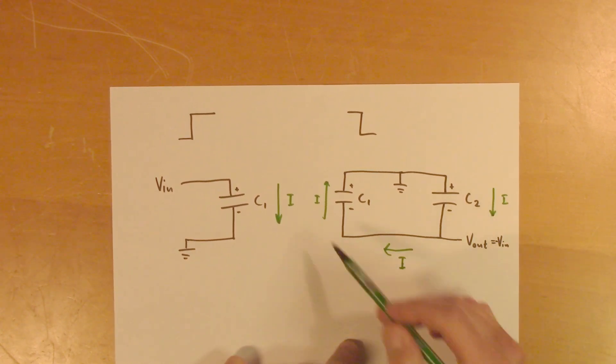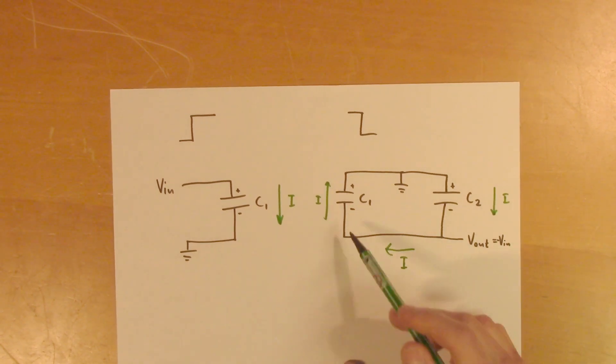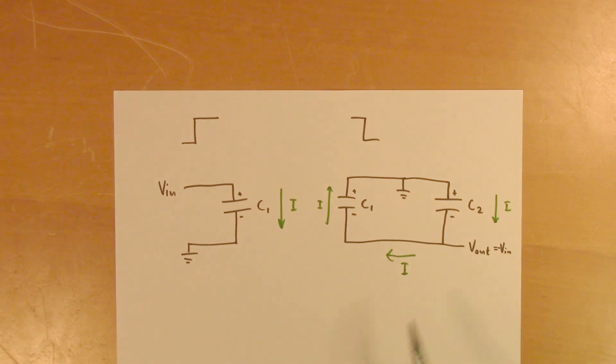but there will still flow some current here, since this capacitor has higher charge than this one. And in the next cycle, it will transfer even less charge. And this continues until C2 is fully charged.